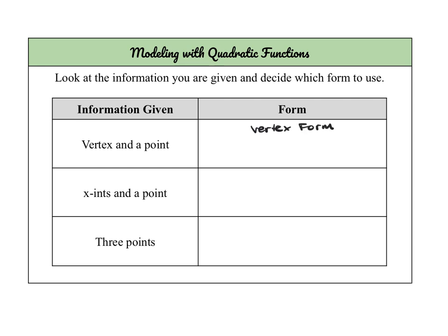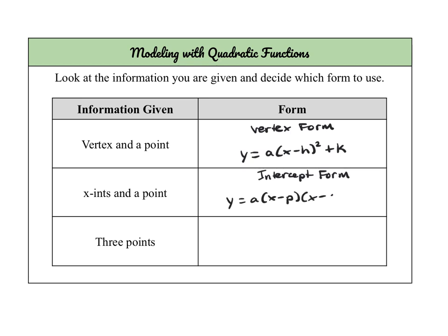Vertex form is y equals a times x minus h, squared, plus k, where (h, k) is our vertex. Now, if you're given both x-intercepts and an additional point, we would want to use intercept form to model our equation, which is y equals a times (x minus p) times (x minus q), where p and q are your roots or your x-intercepts.